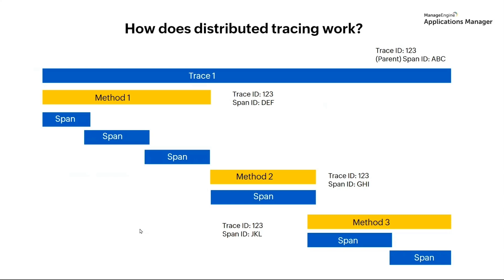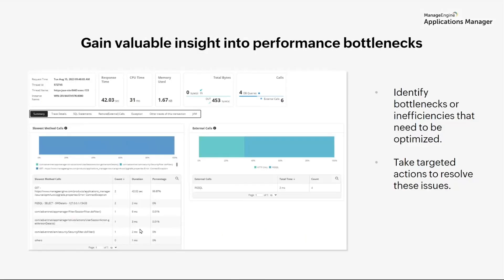To give a quick summary: a trace represents an end-to-end request and can be made of a single or multiple spans. A span represents work done by a single service with time intervals and associated metadata — it's the building block for a trace. Tags and metadata help contextualize the span. Understanding traces and spans will help you get better insight into performance bottlenecks — you'll be able to identify the slowest method calls, which exact call is causing the issue, and pinpoint and optimize them better.